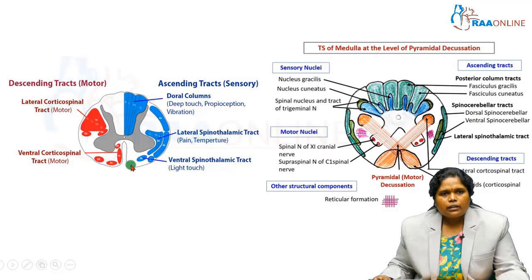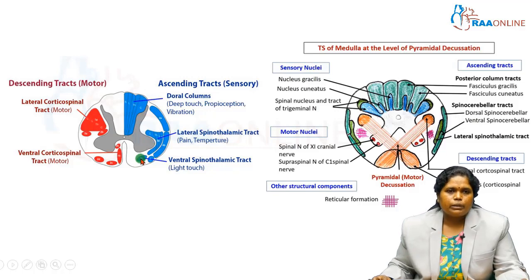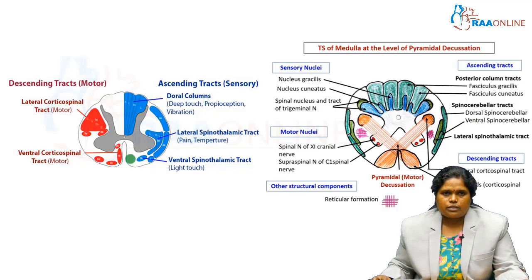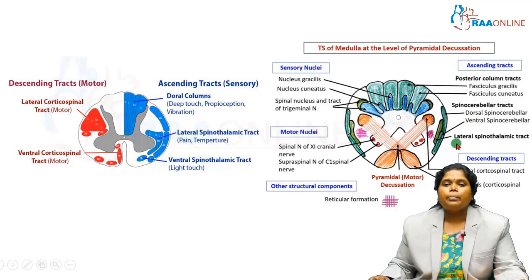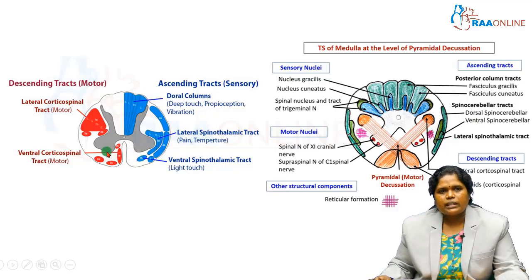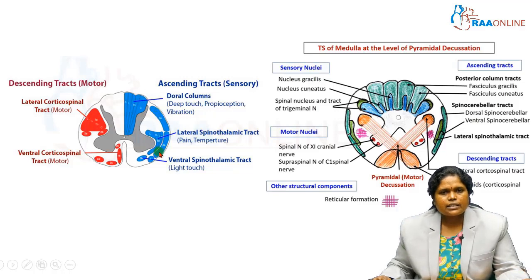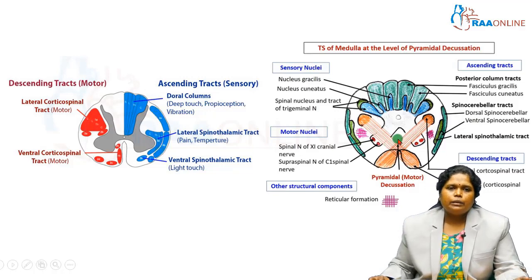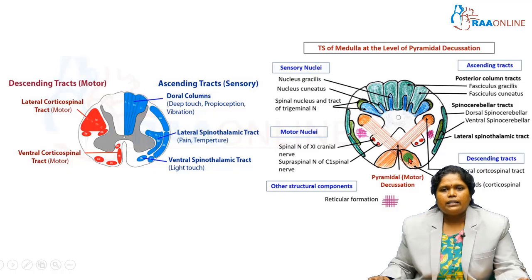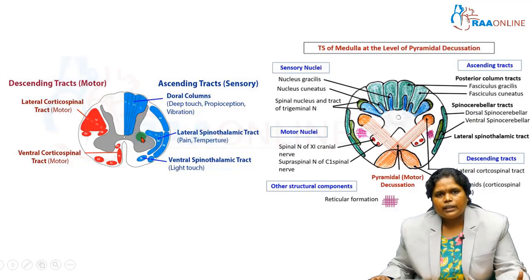Coming to the white matter, the tracts are due to the presence of nerve fibers passing through the spinal cord and brain stem in the form of bundles. Here you can see some tracts in two colors — descending tracts on one side and ascending tracts on the other. The important feature in the white matter you should note is this decussation, which is the pyramidal decussation.